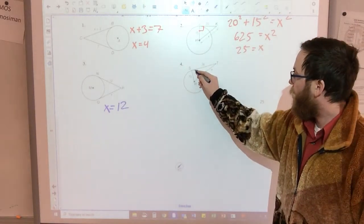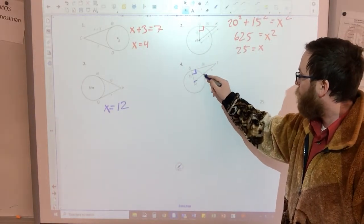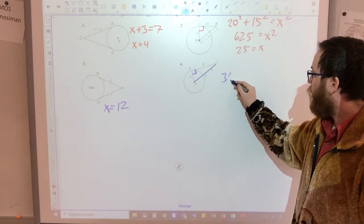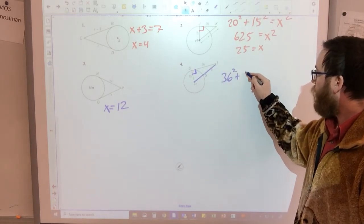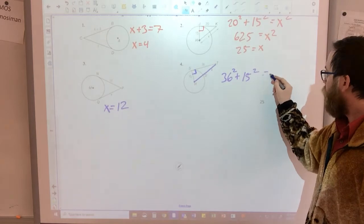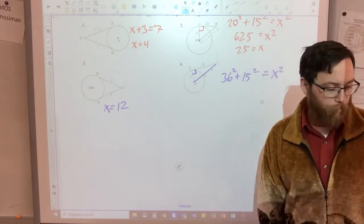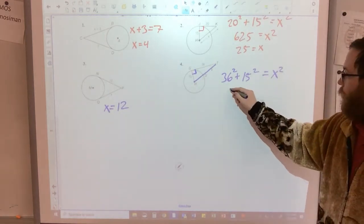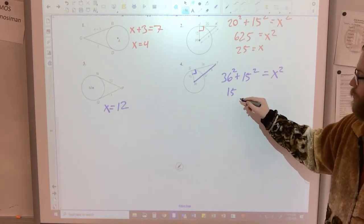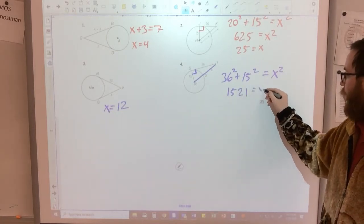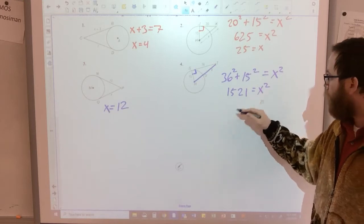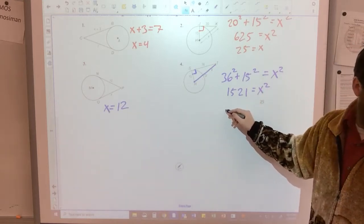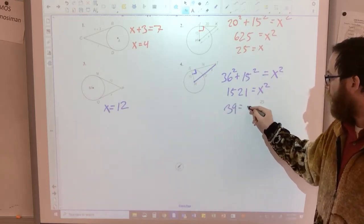A right triangle again, and so x is representing the hypotenuse. 36 squared plus 15 squared equals x squared. Simplifying, you have 1521 equals x squared, square root both sides, so 39 equals x.